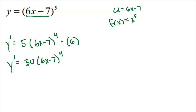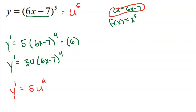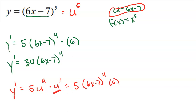To make it clearer: substitute u equals 6x minus 7, so the function becomes u to the fifth. The chain rule gives us 5 times u to the fourth, and then we multiply by the derivative of u, which is 6. Plugging u back in, we get 30 times 6x minus 7 to the fourth. That's the final derivative.